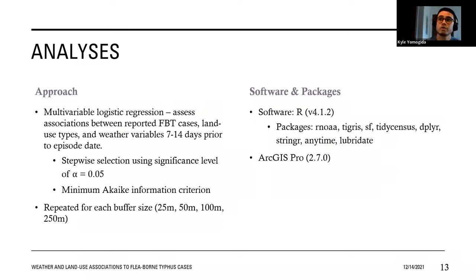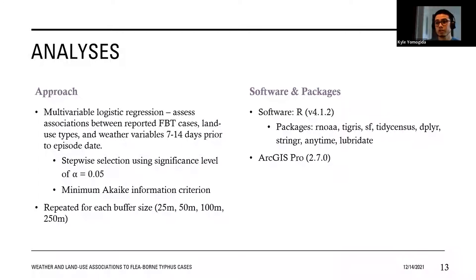We used multivariable logistic regression to assess weather and land use associations to reported flea-borne typhus cases. Because the incubation period for typhus is 7 to 14 days, we were interested in weather patterns within that time range as more specific to exposure risk factors. Models were determined with stepwise selection using a significance level of alpha equals 0.05 and minimizing the Akaike information criterion. This was repeated for each of the four buffer ranges, yielding four different logistic regression models. All mapping was completed in ArcGIS Pro and analyses were done in R.